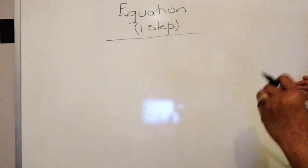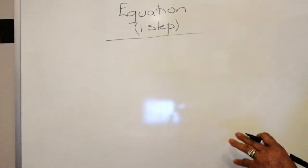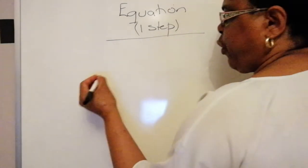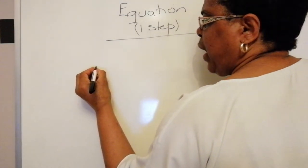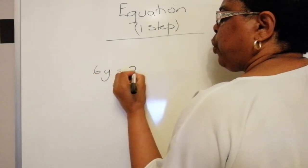So we're going to have a number multiplied by an unknown is equal to another number. So for example, let's say we have 6y equals 24.